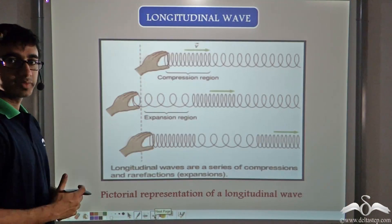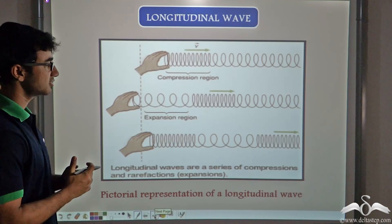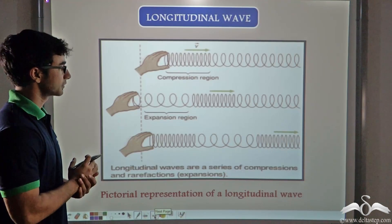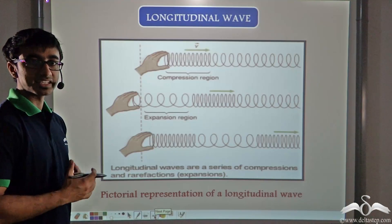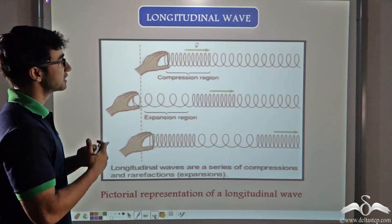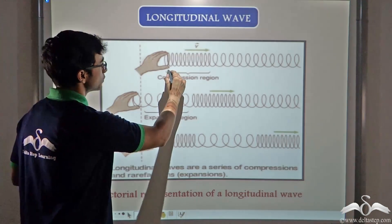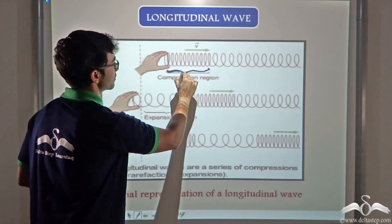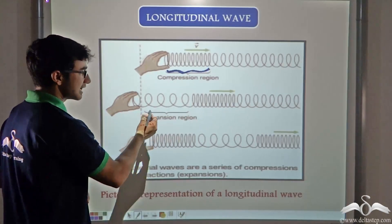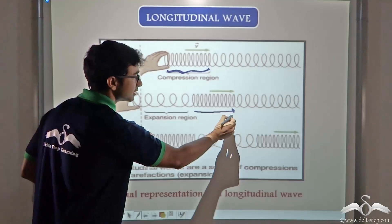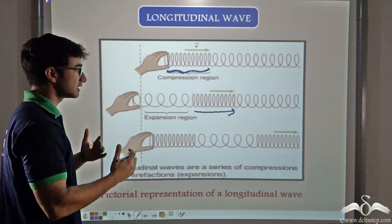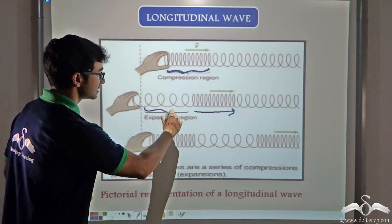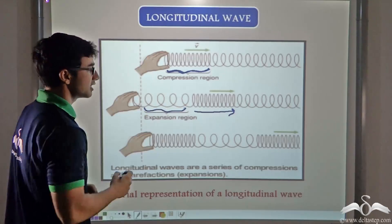In this image, compressions and rarefactions are explained. As seen with the slinky, the parts that come together are compressions. As the compression moves ahead, it leaves behind parts of the slinky that are far away from one another — this is known as a rarefaction.